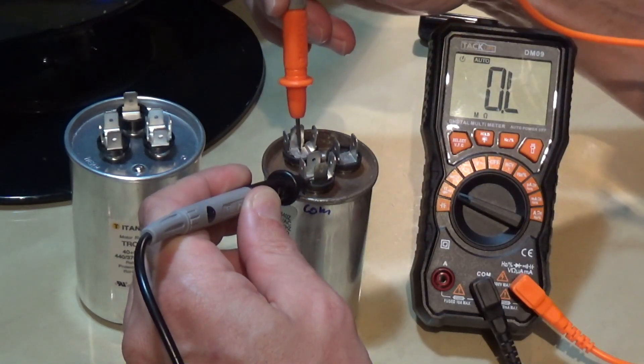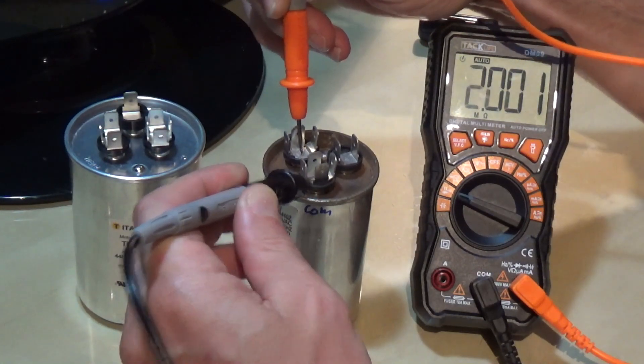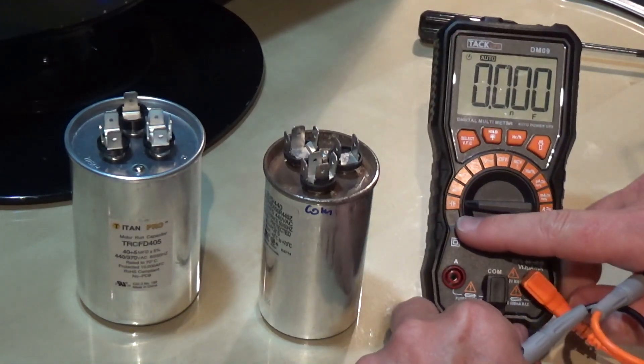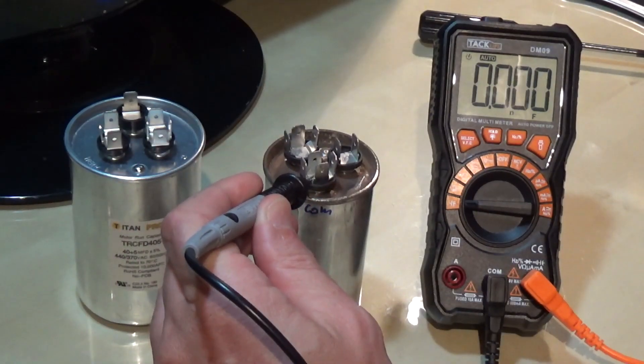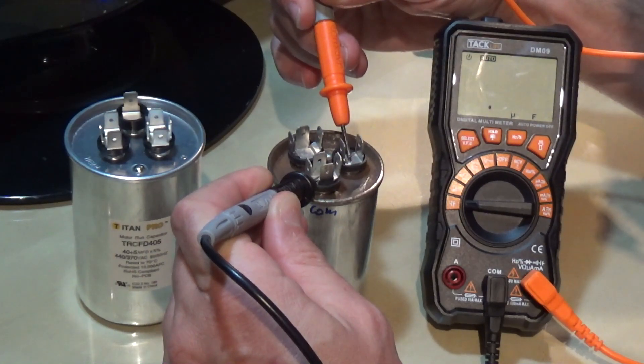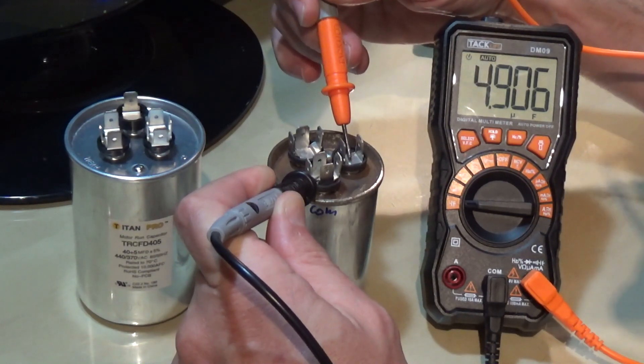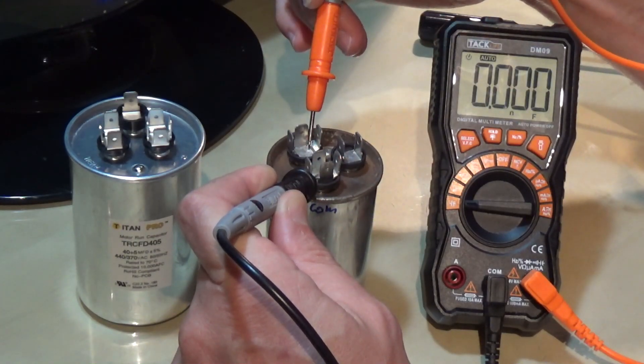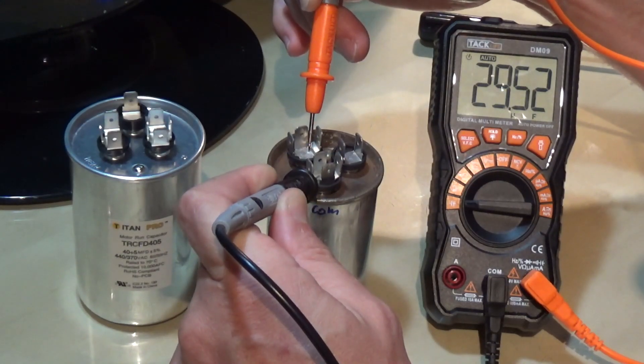Another way: I have a multimeter that checks capacitance. I'm changing my mode to check capacitance. Same thing—common to black, the other lead goes to the other terminal. I can see this one is 4.9, so this is the side that has 5 microfarads. The other side should have 30. I'm checking—29.52. That means this capacitor is good.